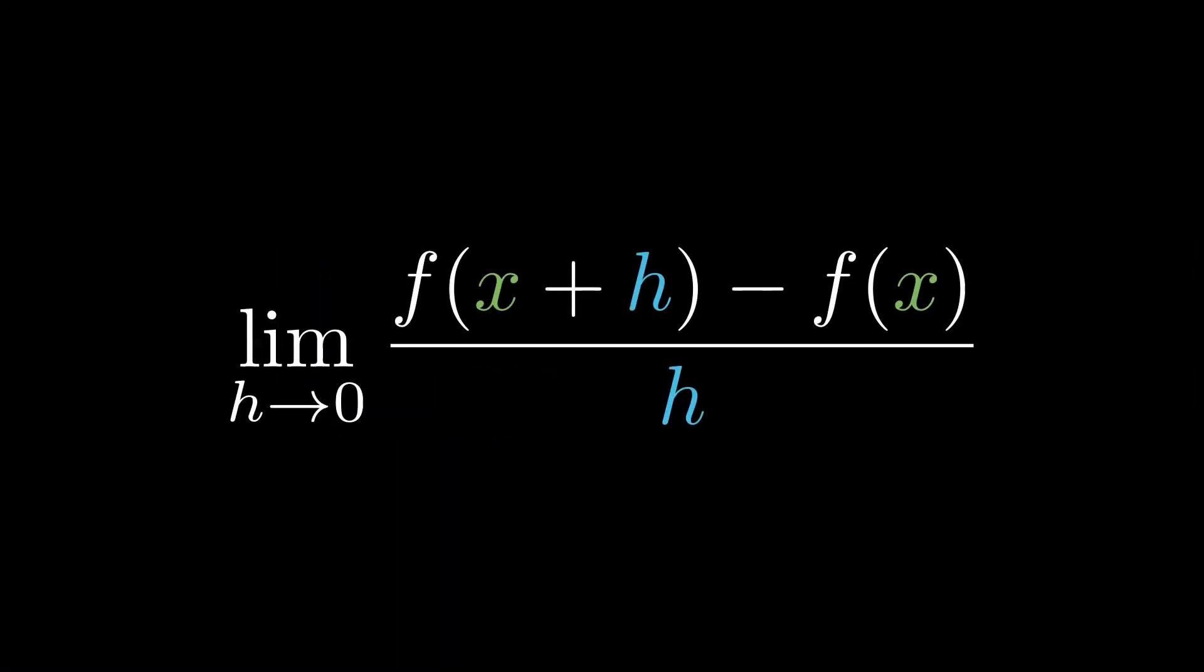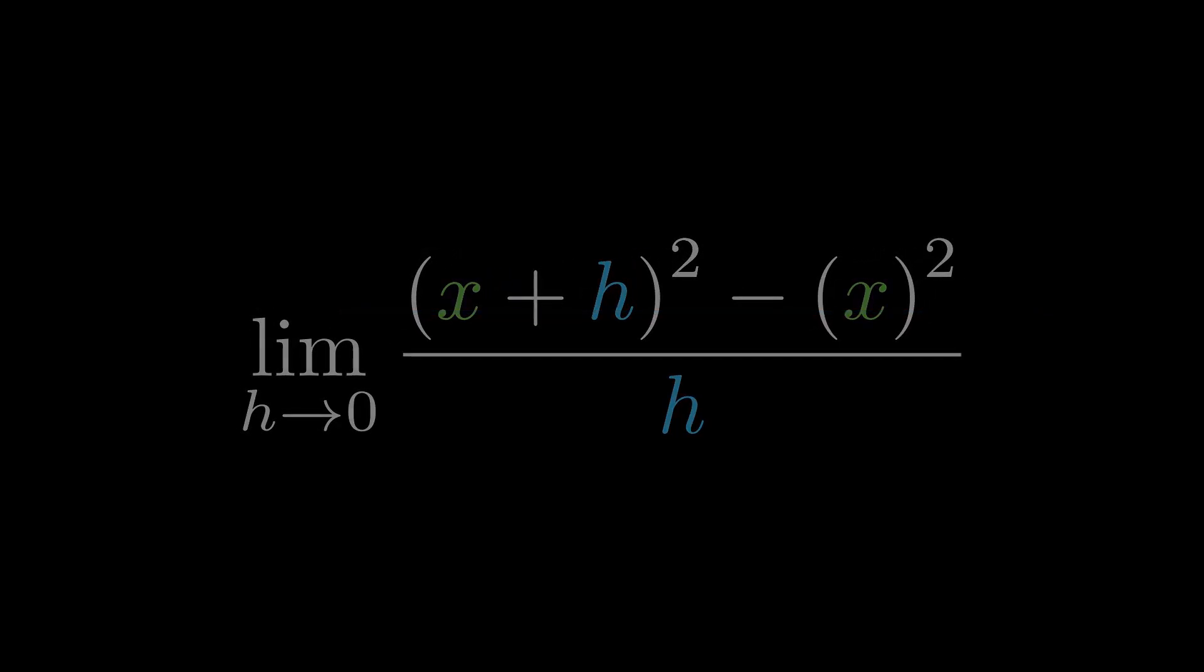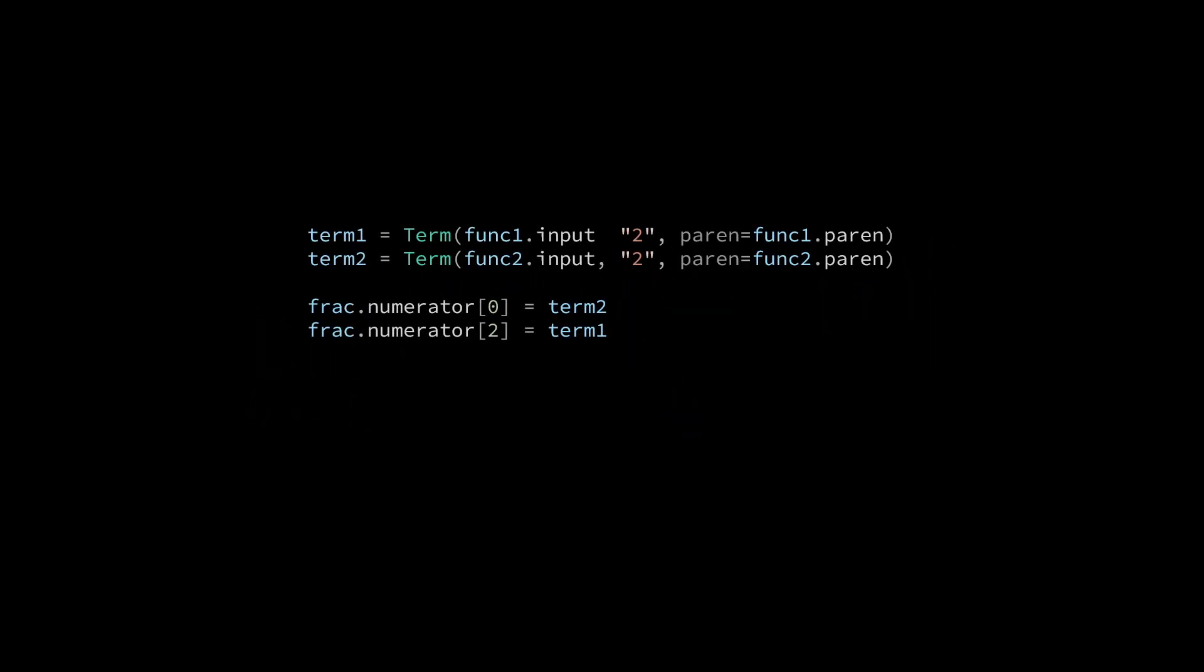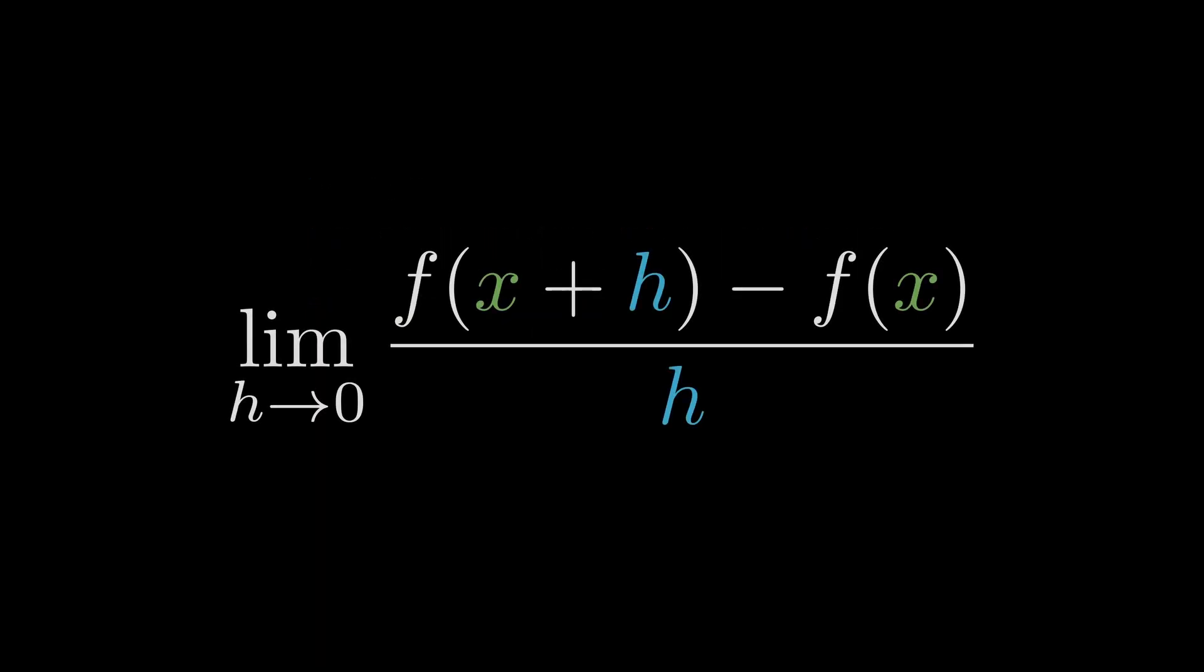And before we move on, you might notice that the addition of the exponent seems to push the entire expression downwards. We can fix this by wrapping the two of the edits we made in h.savey and h.restorey. This will reposition the root expression so that the height of the h is held constant.